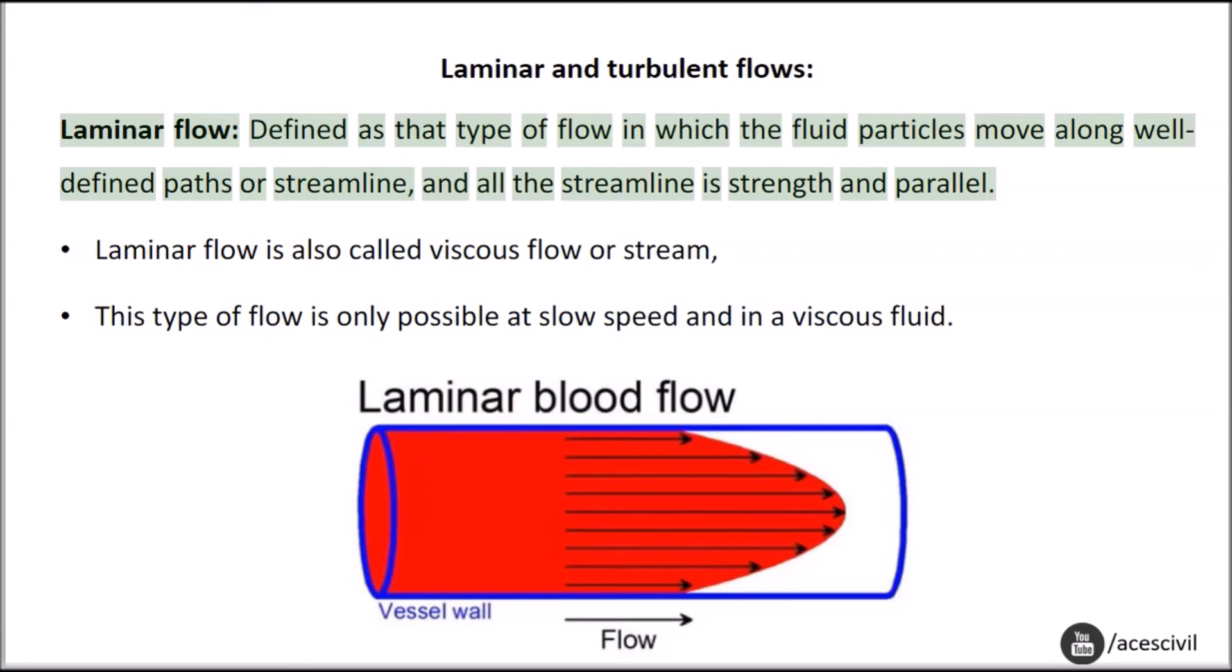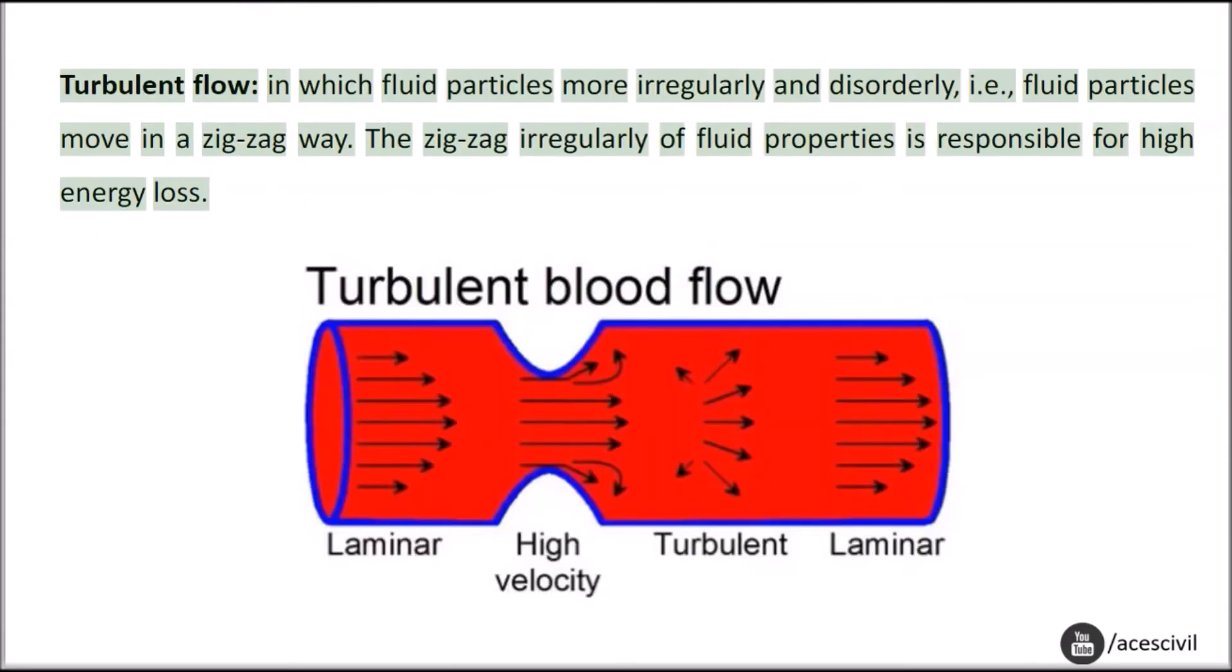Laminar and turbulent flows. Laminar flow: fluid particles move irregularly and disorderly, i.e., fluid particles move in a zig-zag way. The zig-zag irregularity of fluid properties is responsible for high energy loss.